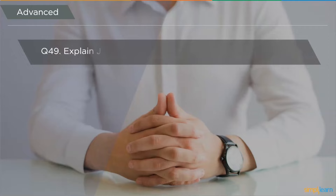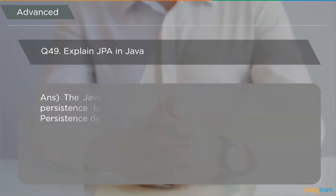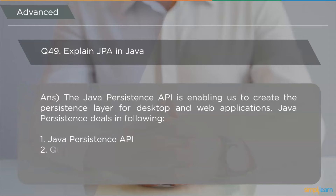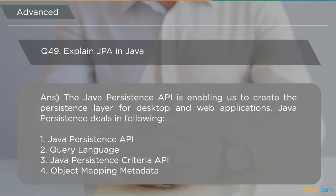The next question is: explain JPA in Java. JPA stands for Java Persistence API. It enables creation of the Java persistence layer for desktop and web applications. JPA deals with the Java Persistence API query language, Java Persistence Criteria API, object mapping metadata, and related topics.